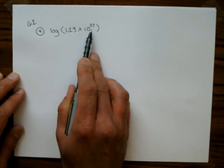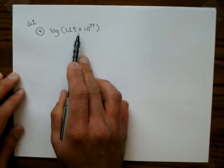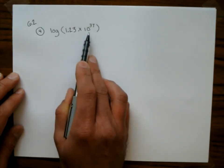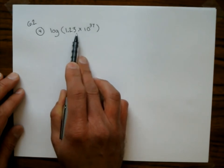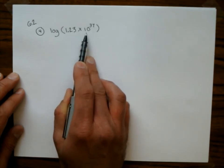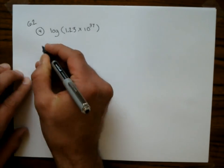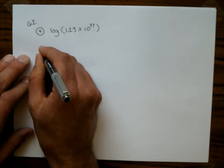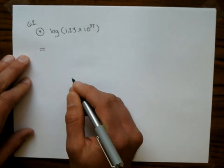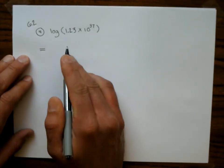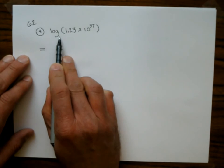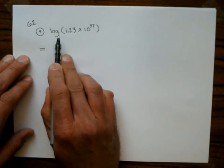What we have here is a power and also a product. Since the whole thing is not raised to the 37th power, we are going to use the product rule for logs. By the way, the base on that log — since it's not written, that's taken to be base 10.